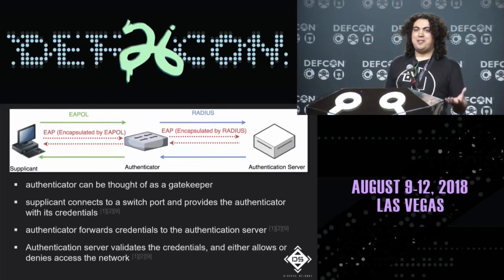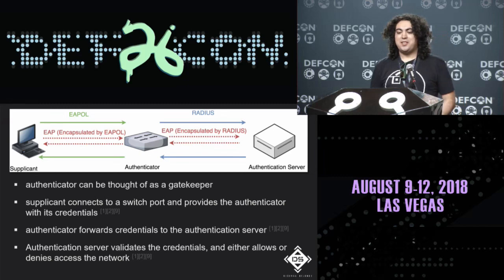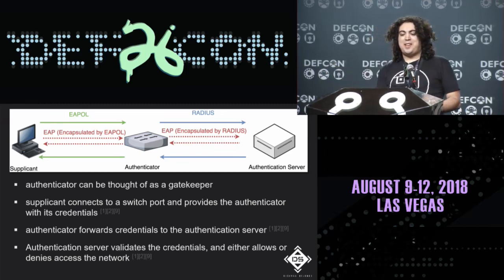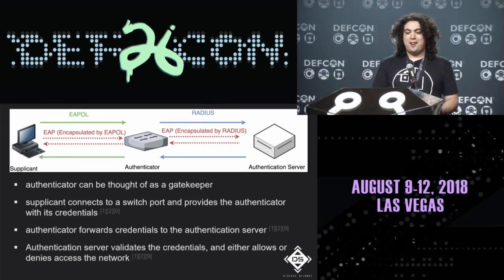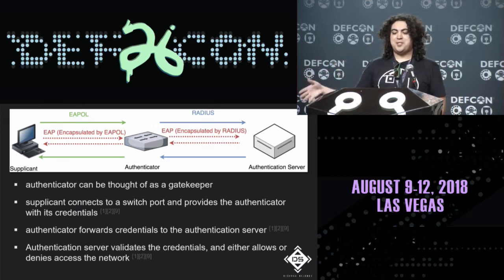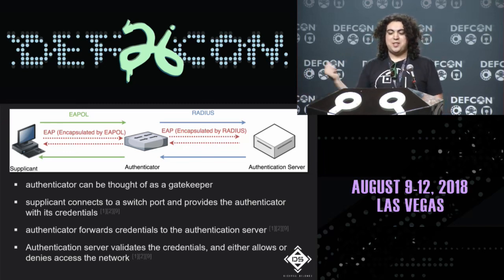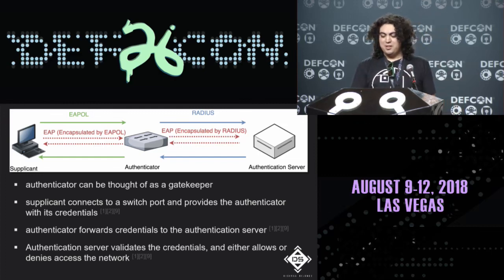The authenticator is your switch — think of it as a gatekeeper. The supplicant connects and provides credentials to the authenticator, which forwards them to the authentication server. The authentication server validates the credentials and sends a message back telling the authenticator to either allow or deny the device access to the network.